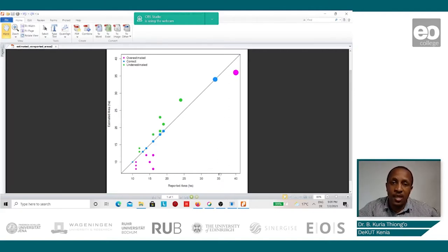We can see that it's an XY graph where on the X axis we have the reported areas in hectares by the farmers, while on the Y axis we have the estimated area from the Sentinel-2 images.